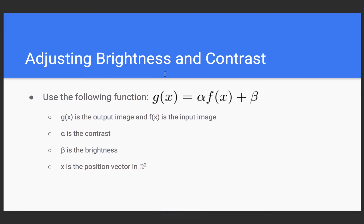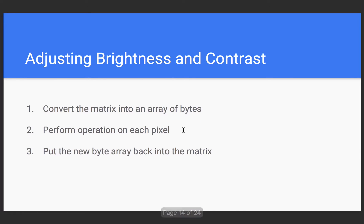Basically what happens is when we apply brightness and contrast to an image, for each pixel value you multiply it by some alpha and then add some beta. So how do we actually do this computationally? What we do is we first have to convert the matrix into an array of bytes, then we have to perform that operation on each pixel — multiply by the alpha and add the beta — and then we have to put the byte back into the matrix.